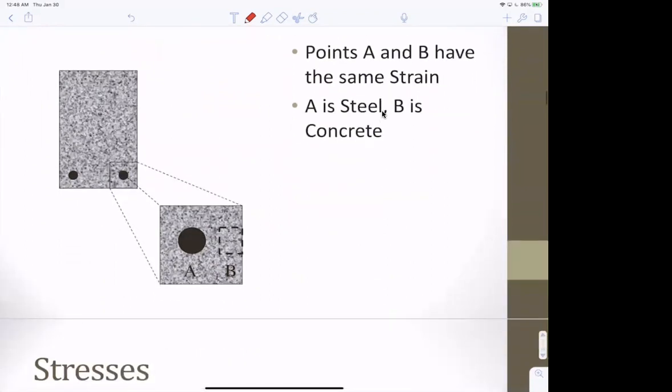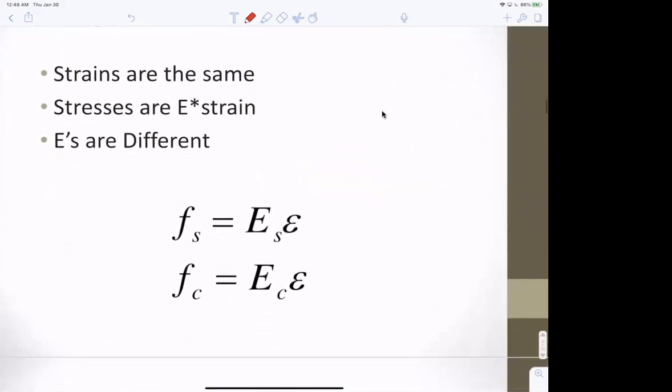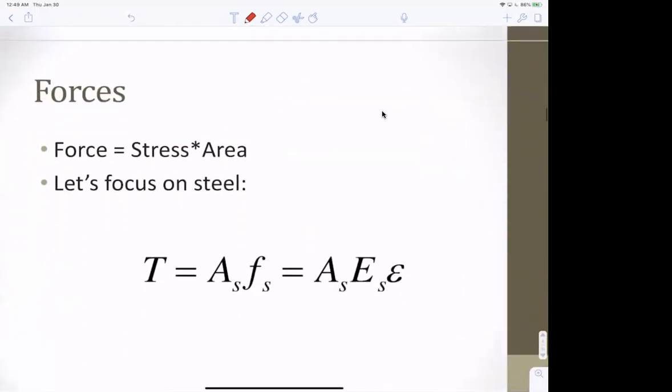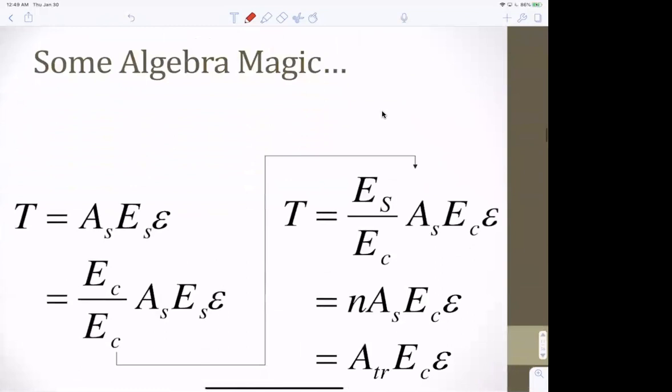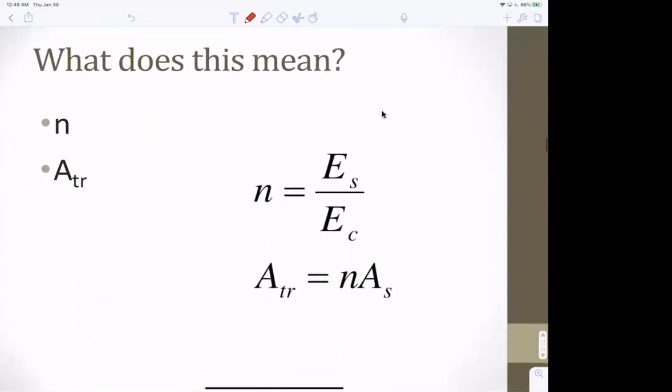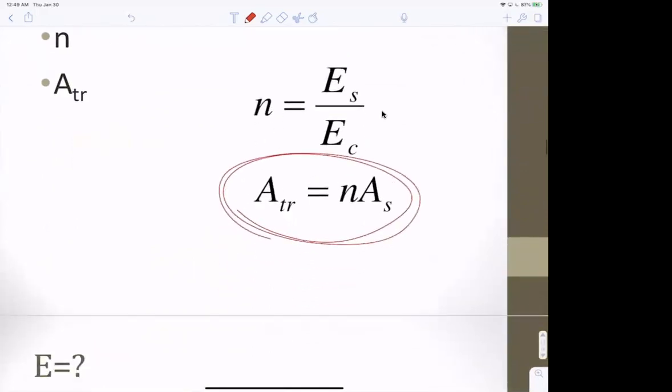These will stretch the same amount. So, the epsilon on the concrete, the strain in the concrete, will equal the strain in the steel. We talked about this, right? The stress in the steel is E of steel times the strain, and the stress in the concrete is E of concrete times the strain. And the strains are the same, because it's not slipping. Okay. And so, the forces are the stress times the area. So, stress. And remember, stress is E times strain. Okay. We went through all this. We did that. And we ended up with a transformed area. N times the area of steel is the equivalent area of concrete.